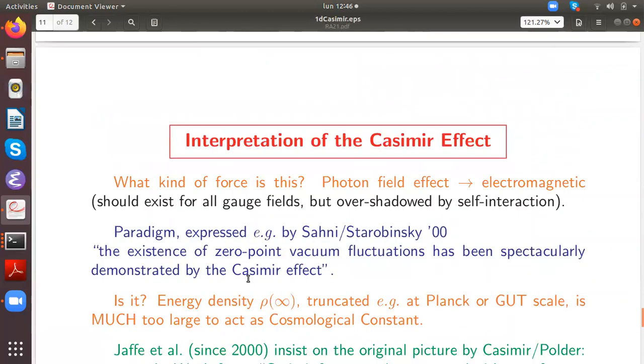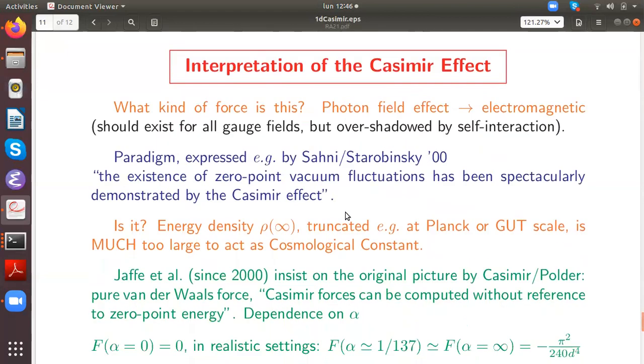Now we come to the interpretation of the Casimir effect. First of all, what kind of force is it? It does not seem to appear in the list of fundamental forces, but it must of course be electromagnetic because we refer to the photon field. In principle, it should exist for all gauge fields, but if they are self-interacting like the gluon field, then this small effect is overshadowed. A common paradigm is to say that this demonstrates the existence of the vacuum energy density. For instance, in this review article, the existence of the zero-point vacuum fluctuations has been spectacularly demonstrated by the Casimir effect. How is this true?